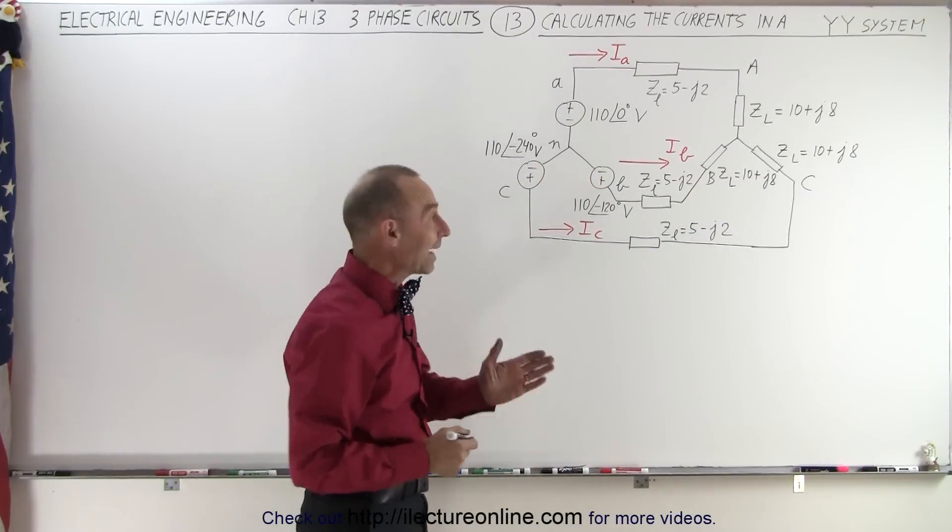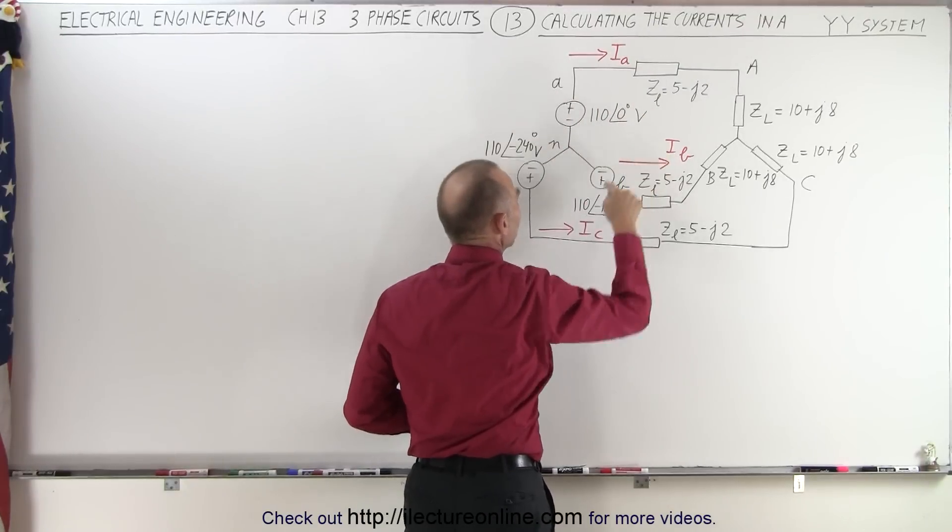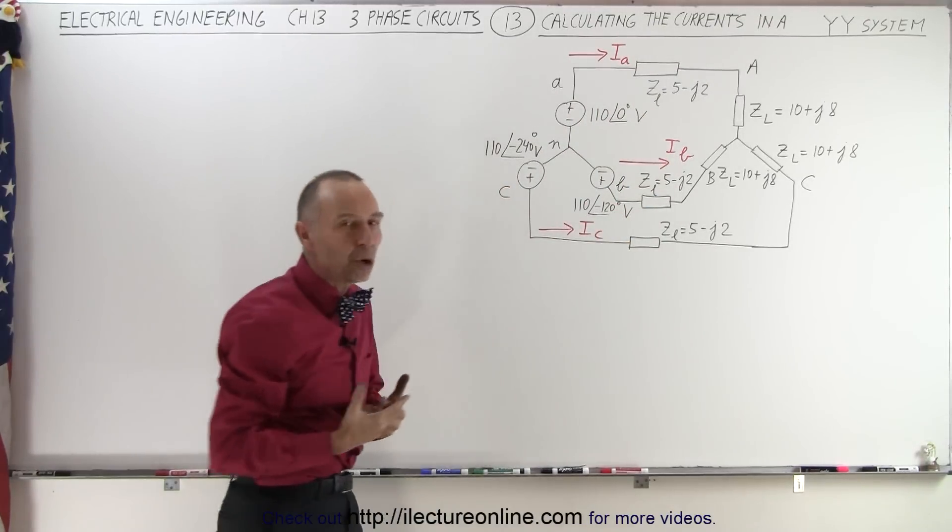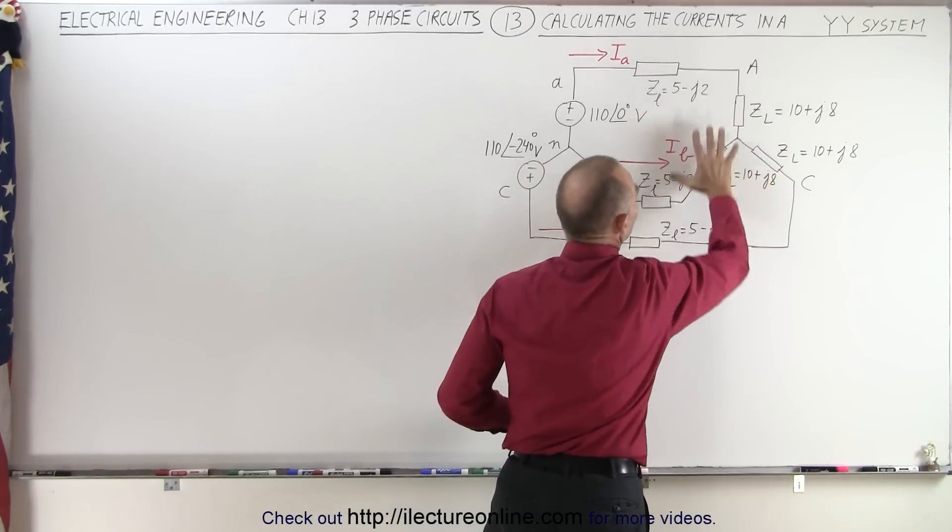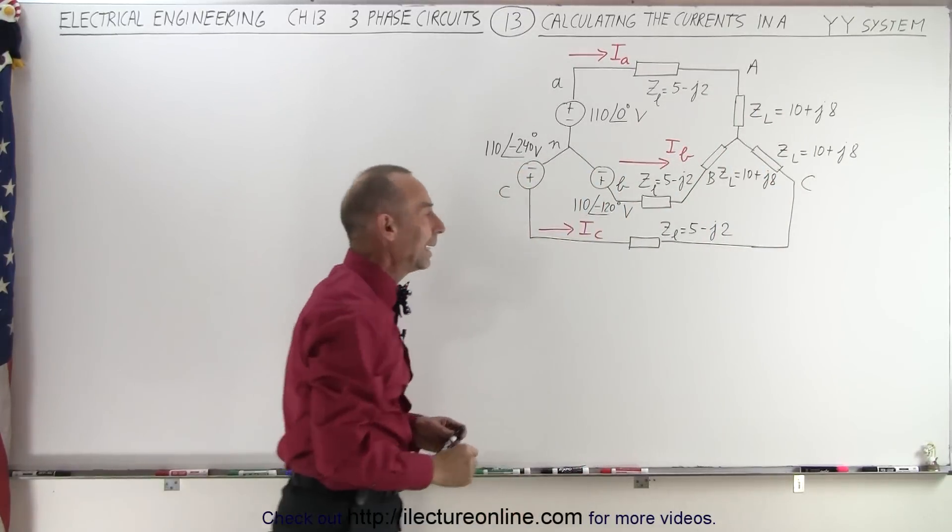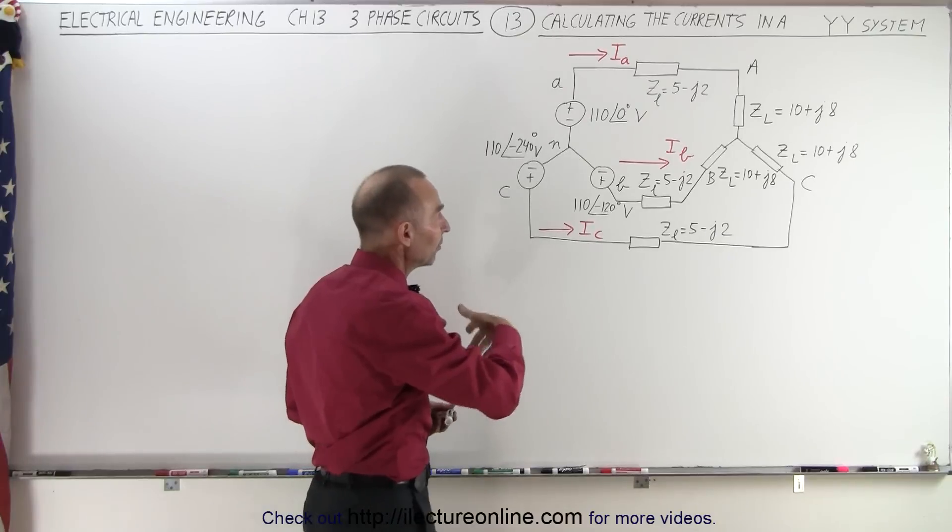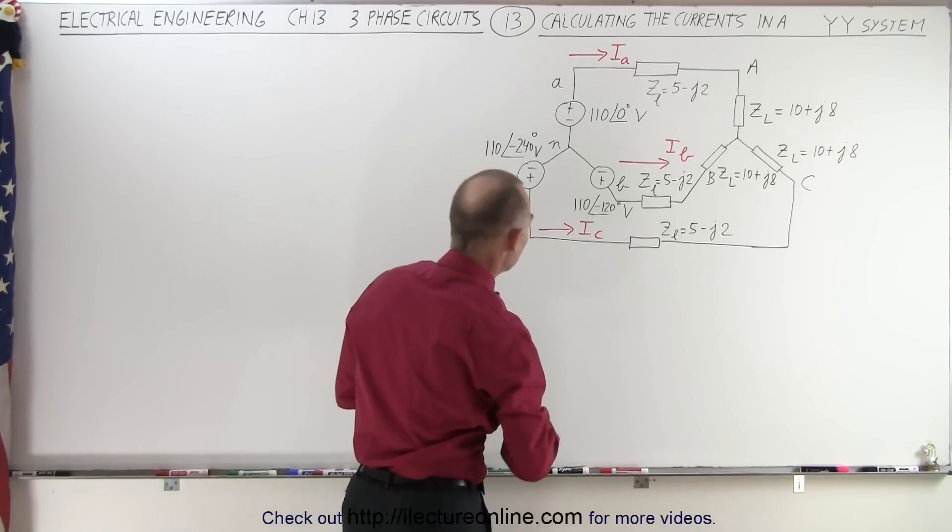So in order to find the three currents, I sub A, I sub B, and I sub C, we need to find what we call the Y impedance, the impedance of the Y configuration load. And to do that, we need to sum up the source impedance, the line impedance, and the load impedance.